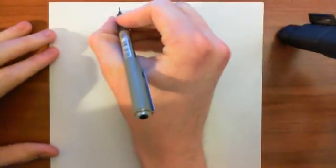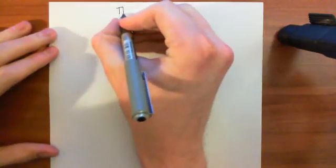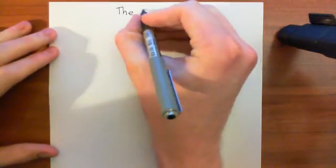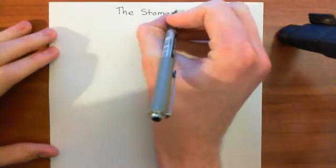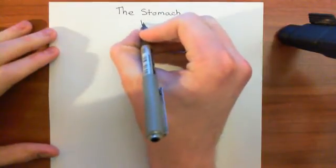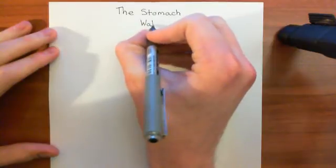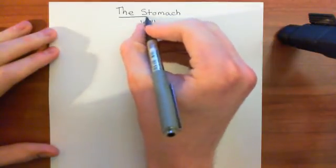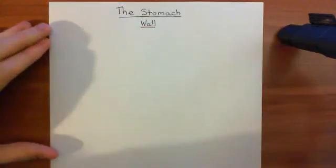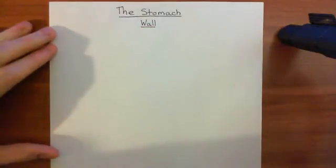Welcome to this first video in the playlist on the gastrointestinal tract. In this video, we're going to talk about the histology of the stomach wall. We'll start off by discussing very basically the structure of the stomach, and then we'll discuss the histology of the stomach wall — the microanatomy of the stomach wall. Let's start off with a bit of basic anatomy.